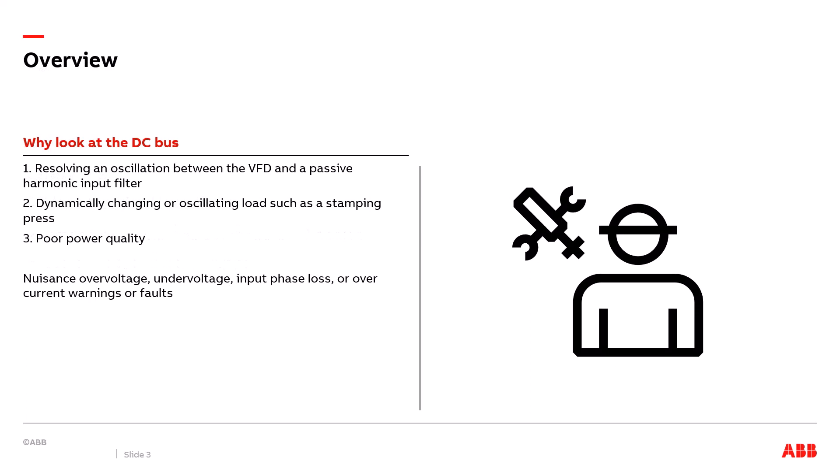Here are three reasons why you may need to use an oscilloscope to look at a VFD's DC bus. The first one is if a VFD has been packaged with a passive harmonic input filter. There could be oscillations between the drive and the filter. The second one is in industrial applications sometimes there are oscillating loads such as stamp presses that can cause ripples on the DC bus. And the third cause could be poor input power quality to the VFD that could be causing issues on the drive's DC bus. All these issues could cause the drive to trip out on nuisance over voltage, under voltage, input phase loss, or over current warnings or faults.